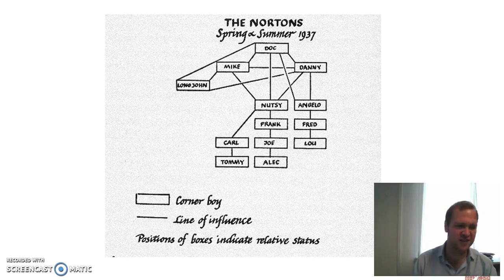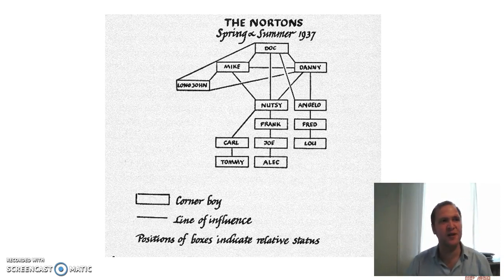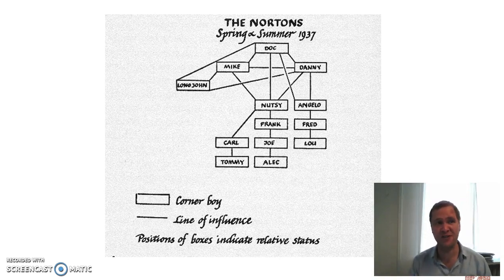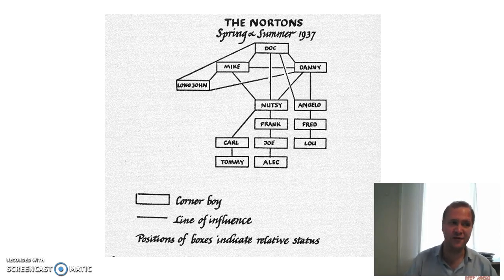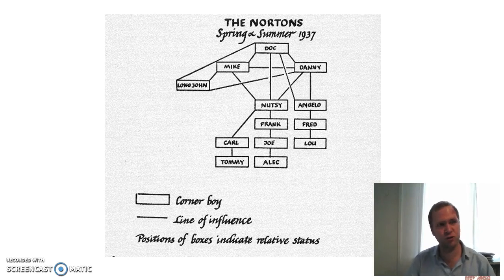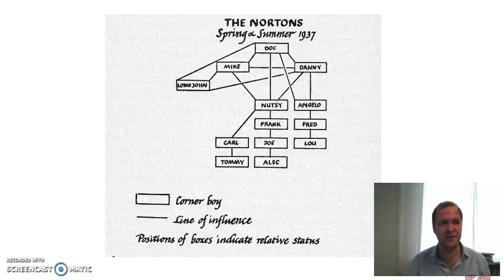Moreover, the work is taxonomic rather than analytical. White, for instance, makes much of the difference between the corner boys and the college boys in the Italian immigrant community, mapping them out in ways like this. And finally, the work typically shared a certain ethos, oriented at the policy setting of the time, by showing how social and moral order prevails in what was otherwise often considered deviant communities.